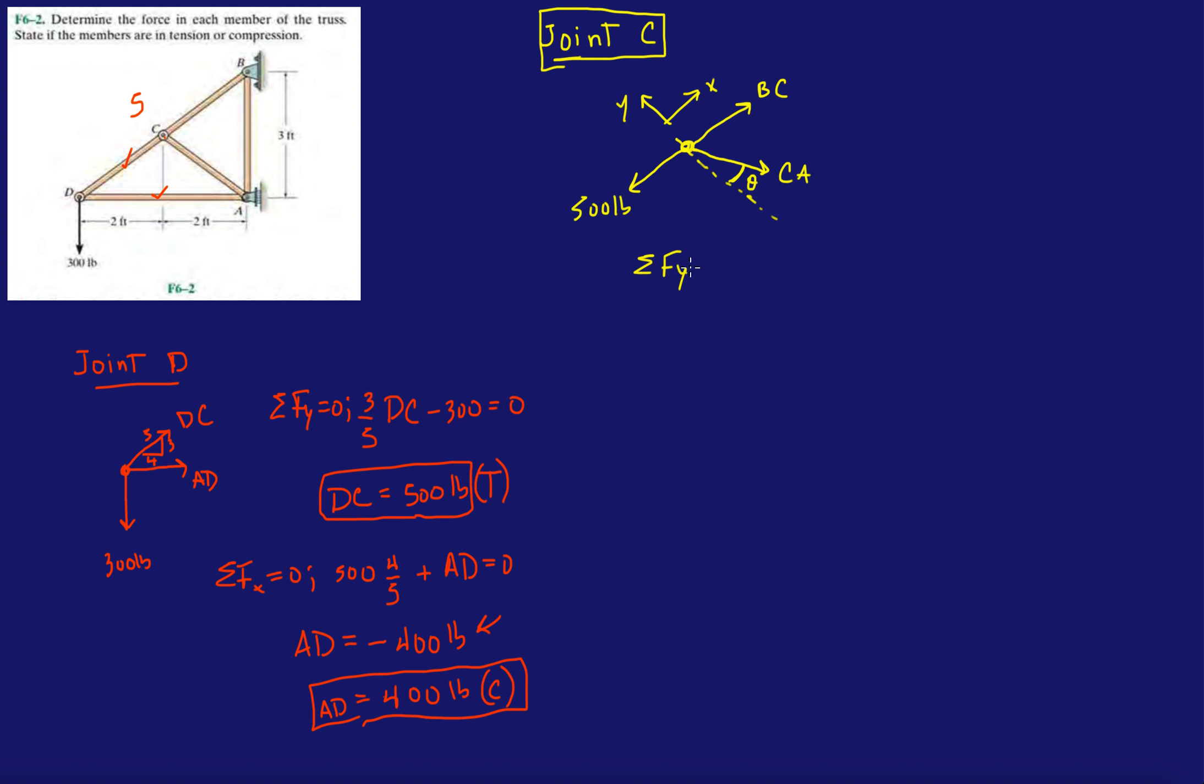But what happens, think about the zero force members that we talked about in the previous problem. If I sum all the forces in the Y, I only have the, I guess, the negative CA cos theta equals zero.